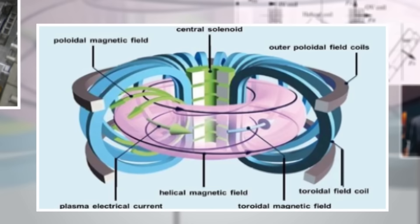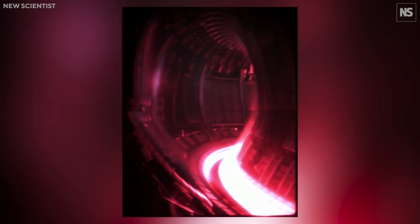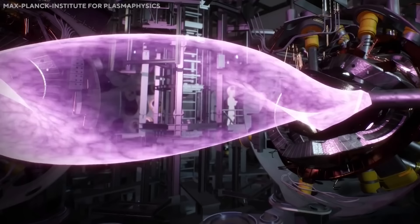The largest stellarator in the world is the Large Helical Device or LHD in Japan, which has a heliotron configuration. This means that the magnetic field is generated by a combination of a helical coil and a poloidal coil, which produce a twisted and helical magnetic surface. LHD has a major radius of 3.9 meters and a plasma volume of 30 cubic meters, which allow for high plasma parameters and long pulse operation. LHD aims to study the physics of high beta plasmas, which have a high ratio of plasma pressure to magnetic pressure and are relevant for fusion reactors.